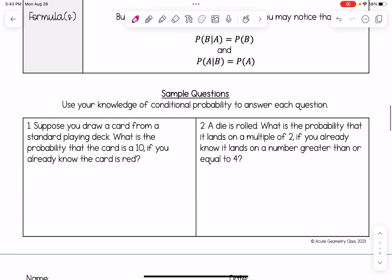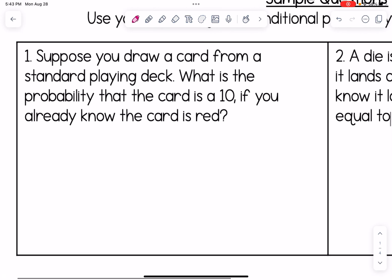Let's look at some examples. Suppose you draw a card from a standard playing deck. What's the probability that the card is a 10 if you already know the card is red? When we have a standard deck, we have 52 cards. But now that we know that the card is red, that sample space is not 52 anymore. It now has 26 cards.